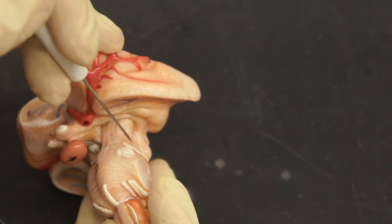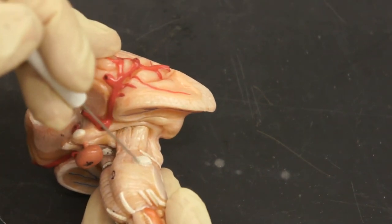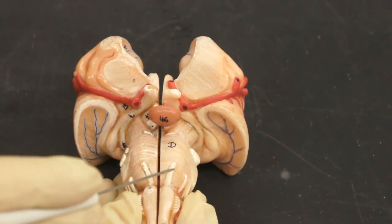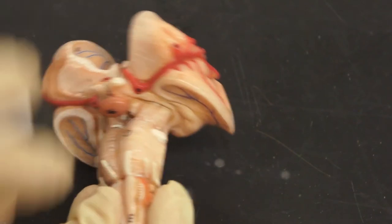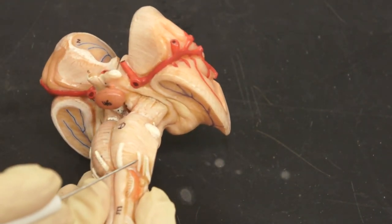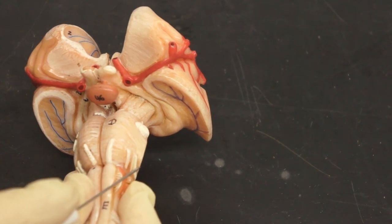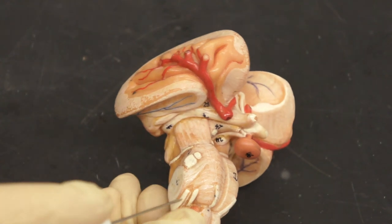And then on the side we have trochlear nerve four. Next to that we have trigeminal nerve five. And then at the front again, we have abducens nerve six. And then this bundle here, we have facial nerve seven. On the outside, right here, we have vestibulocochlear nerve eight, again on this side.